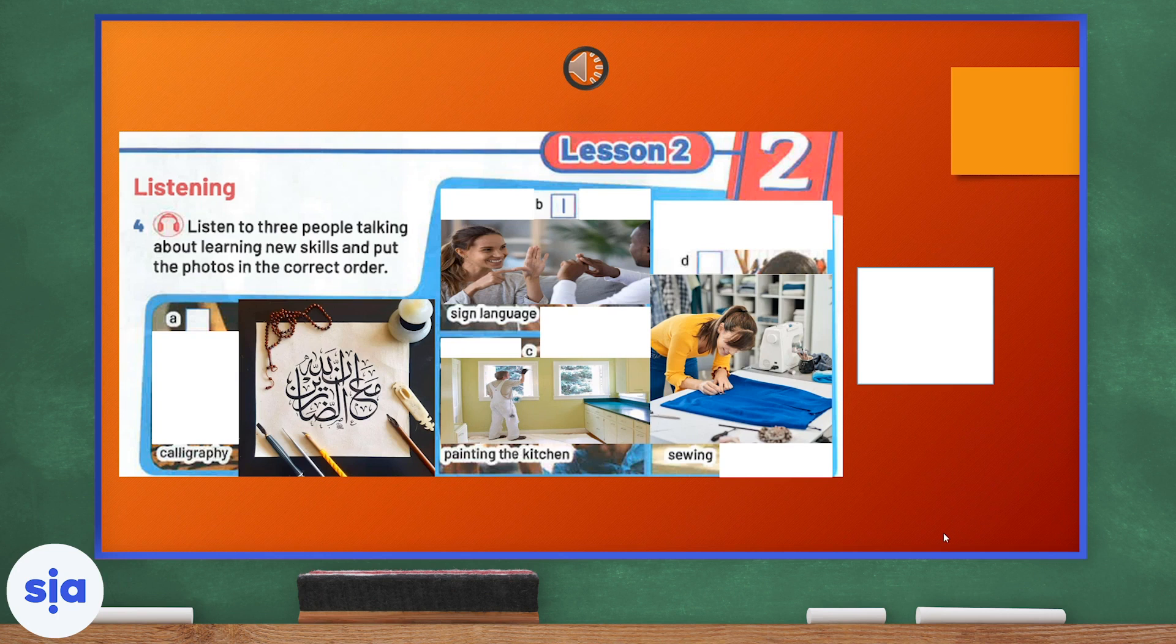Now, we're going to move on to our listening section for lesson two. Listen to three people talking about learning new skills and put the photos in the correct order. So, we have calligraphy, sign language, painting the kitchen and sewing. Let's see. I'm Tamir. At the moment, I'm learning a new skill. I'm learning sign language so I can communicate better with my cousin Sammy. Sammy is deaf. He can't hear. He's learning sign language at school too. I'm having sign language lessons on Saturday morning so I can give Sammy a surprise.